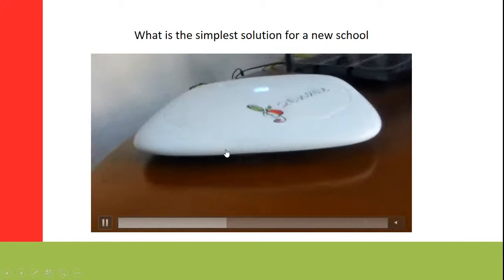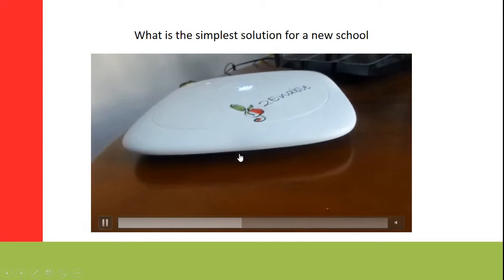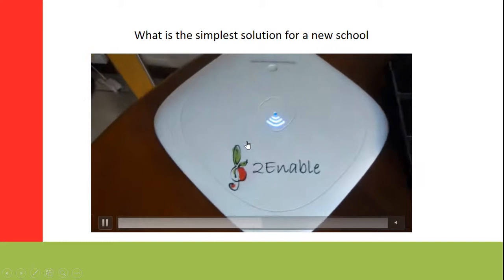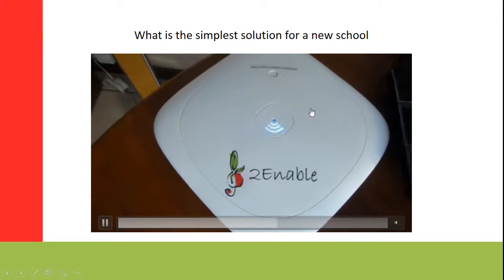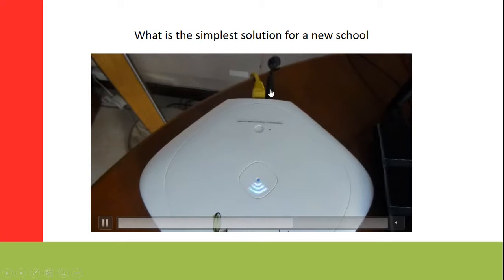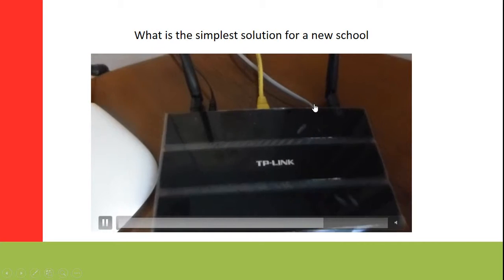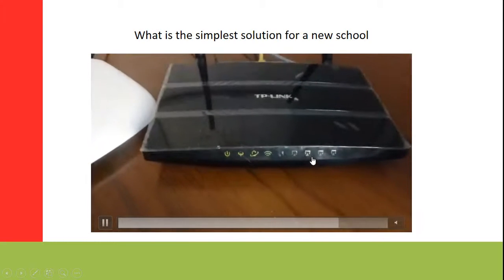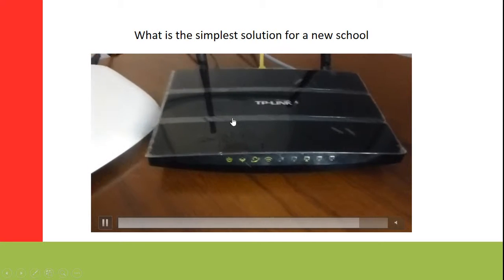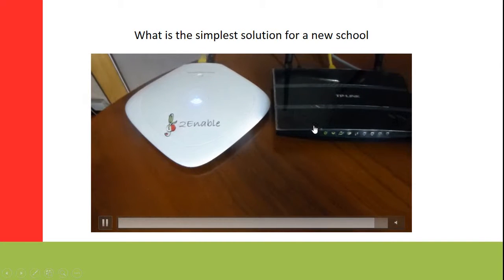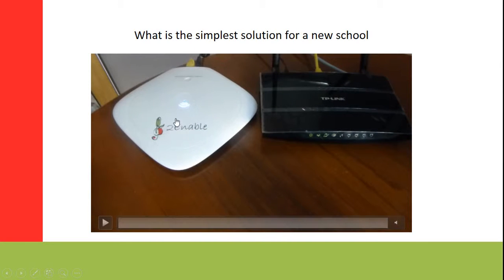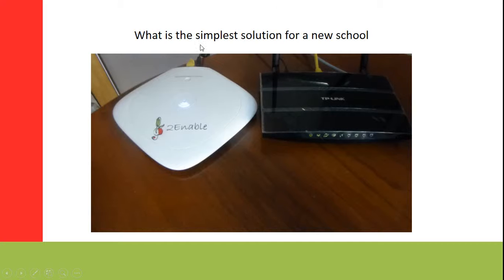To give you an idea of its depth, it's probably two or three centimeters deep — slightly deeper than a dinner plate. There's a power lead going into it and a LAN cable connecting it to the router, which is connected to the internet. This combination illustrates what typically happens at a school — there's an existing school network, and we're able to connect this device into it. Users have two choices: connect directly to the 2Enable library, or connect via the existing school network to reach the library.